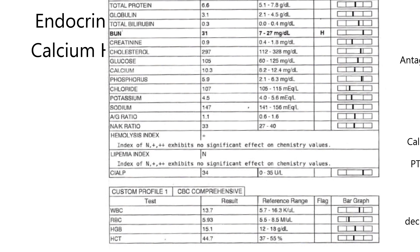You can see this visually — here's the low end of the normal range, here's the high end. Anything below here would be low, anything above would be high. You could call that hypercalcemia or hypocalcemia. And it looks like 10.3 is in the normal range, so this dog has a normal amount of calcium in its blood.